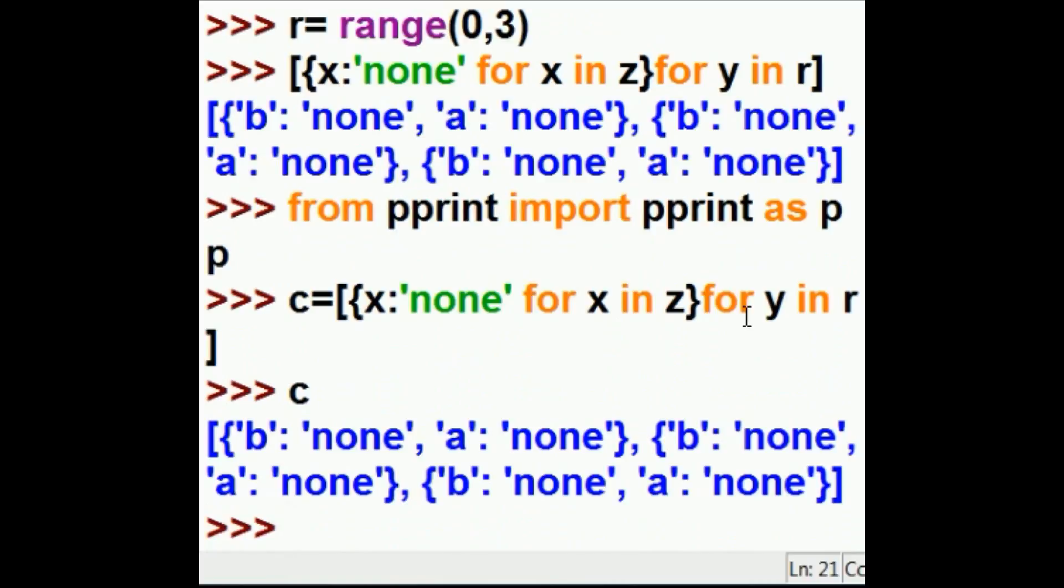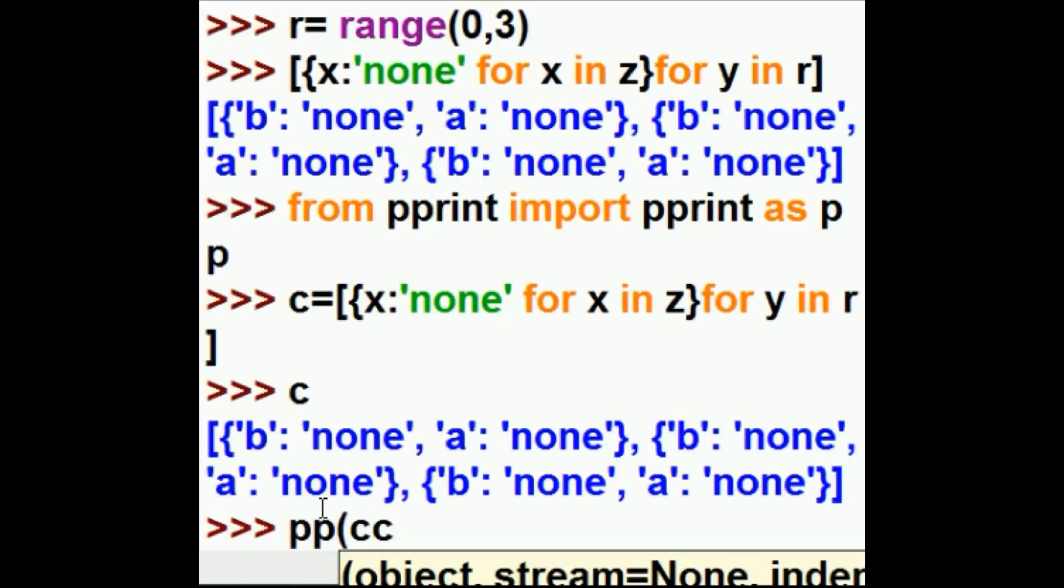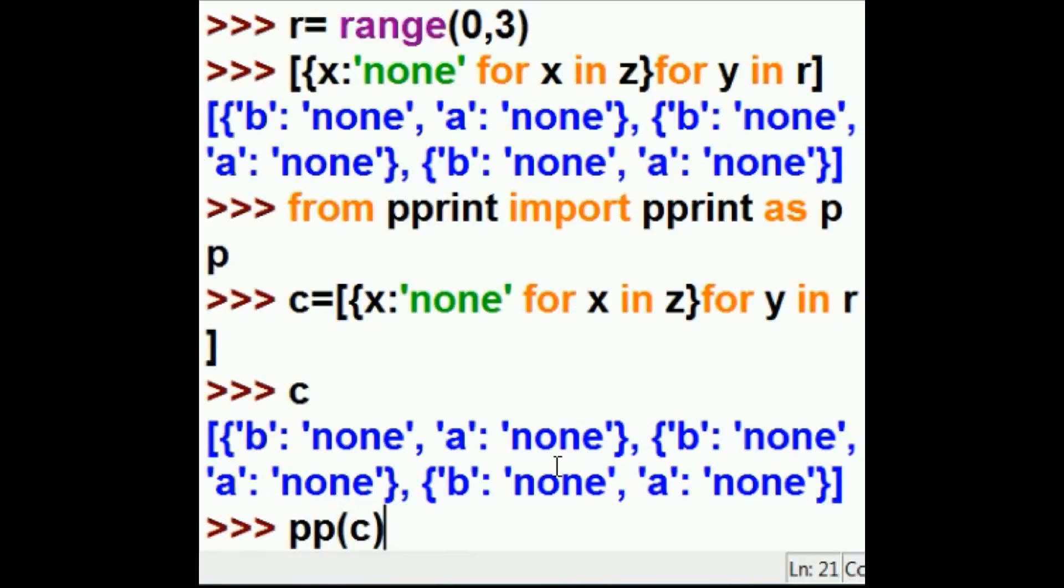But if I now use that pp variable from pprint, which I refer to as pp now, and I'm going to key in pp, and what do I want to pp on? On C. That sounded bad.